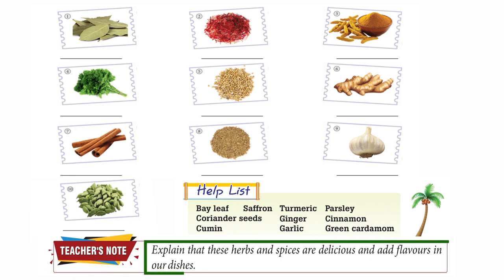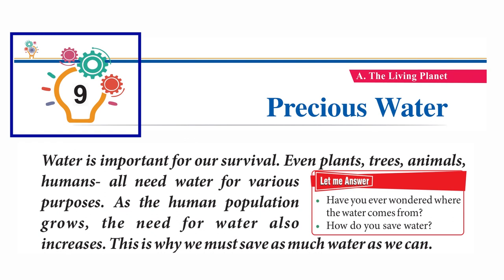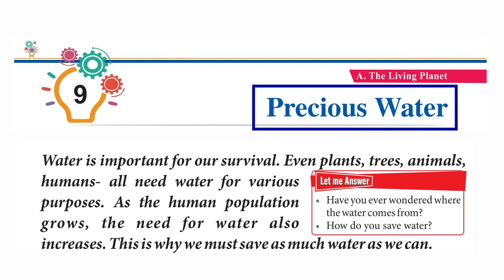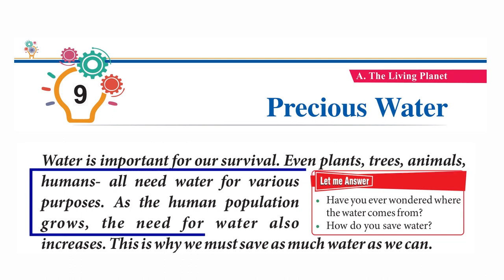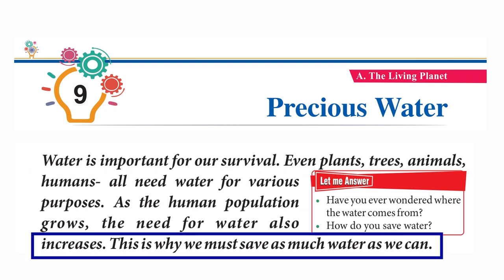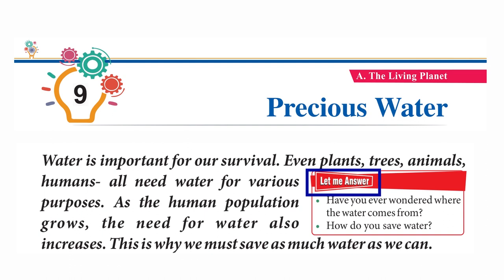Teacher's Note: Explain that these herbs and spices are delicious and add flavours to our dishes. Chapter 9: Precious Water. Water is important for our survival. Plants, trees, animals, and humans all need water for various purposes. As the human population grows, the need for water also increases. This is why we must save as much water as we can.